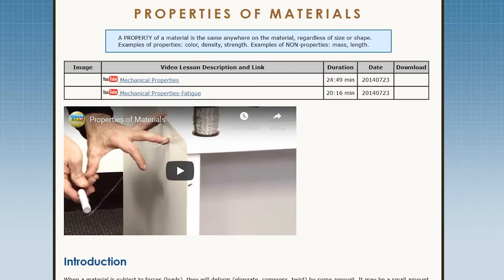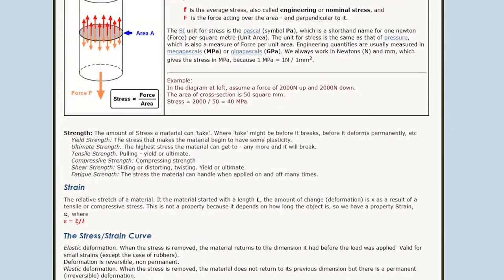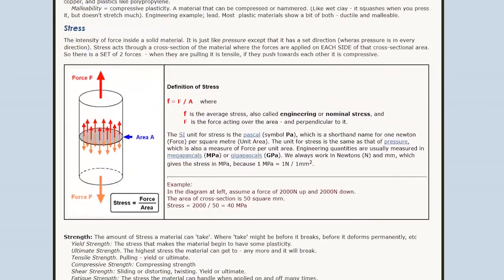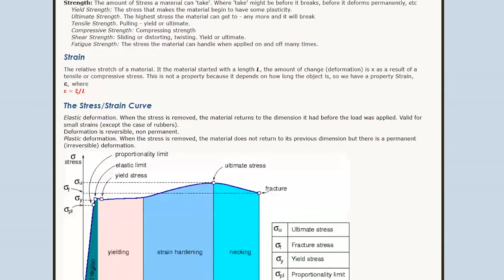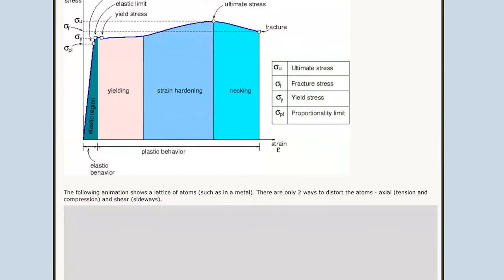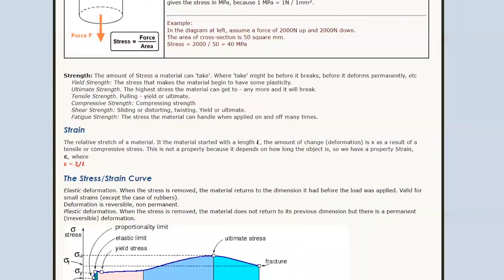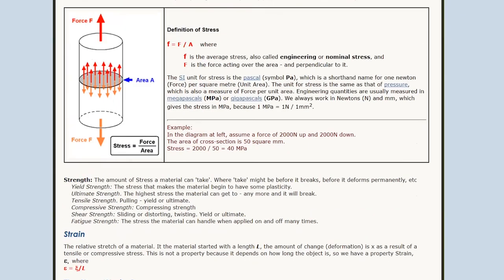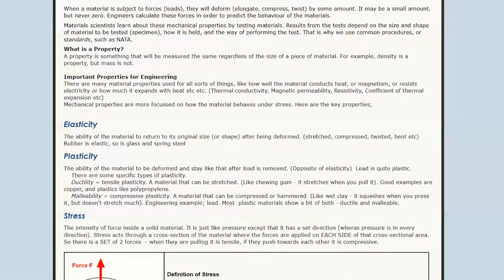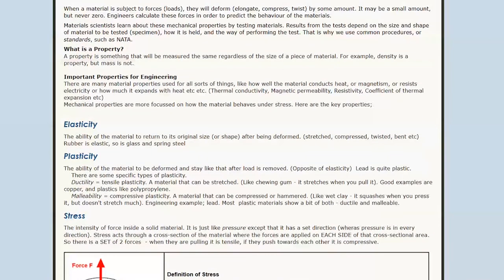We need to be quite specific on those definitions — they've got to be very accurate because there can be some confusion. For example, toughness and strength can be opposites in materials. Normally we would think if something's tough and strong, they're almost the same word. Well, they're not. Not in engineering.